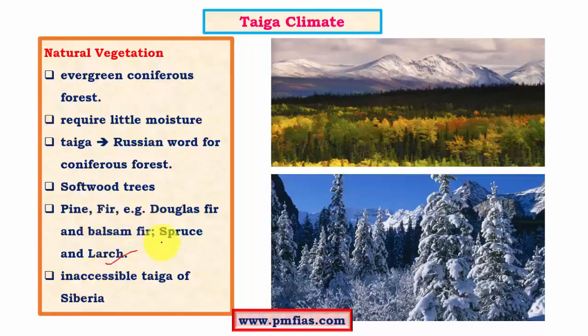Spruce and larch occur in the lower latitudes of the sub-arctic region, while pine and fir occur in the higher latitudes. The Taiga type of climate gets its name from the Russian word 'taiga,' meaning coniferous forests. Since coniferous forests are examples of softwood trees, the lumbering industry is quite profitable in this region.